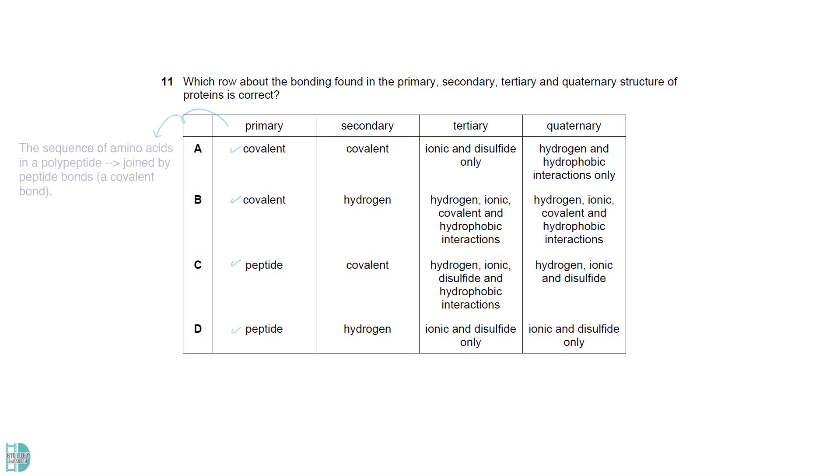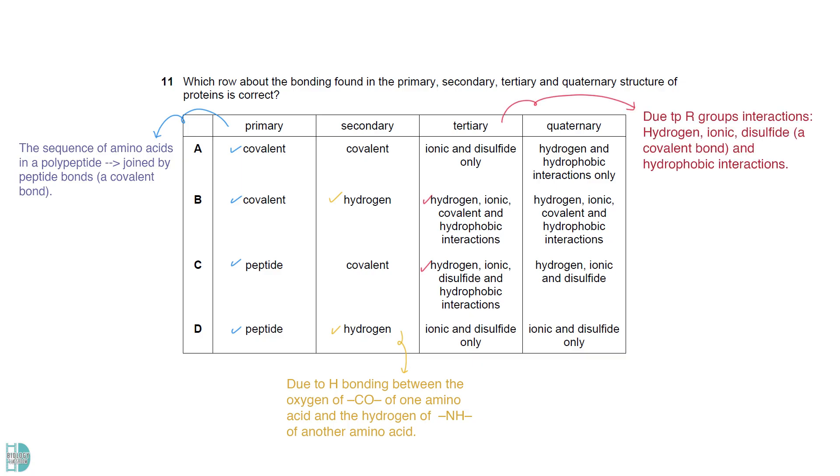The primary structure of a protein refers to the sequence of amino acids in the polypeptide. They are joined by peptide bonds, which is a type of covalent bond. The secondary structure is due to hydrogen bonding between the oxygen of the C=O group of one amino acid and the hydrogen of the NH group of another amino acid.